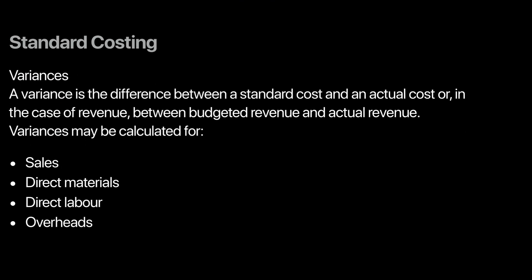What this topic will essentially cover is the concept of variances — the difference between standard cost and actual cost, or budgeted revenue versus actual revenue. We will look at sales variances, direct material variances, labor cost variances, and overhead variances. Fixed overheads can also have variances since expected fixed costs can differ from actual fixed costs, or you may over-absorb or under-absorb fixed costs. Understanding these differences and their causes will give the firm direction on how to improve in the future.